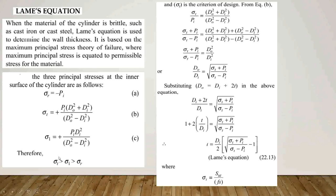Therefore, tangential stress sigma-T is always greater than sigma-L, the longitudinal stress, which is also greater than sigma-R, the radial stress. So Lame's equation considers sigma-T as the design criteria, since it is greater than the longitudinal and radial stresses. We therefore use equation B, which is sigma-T.